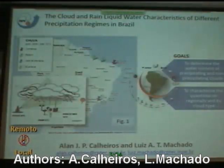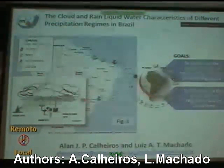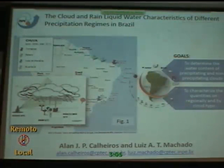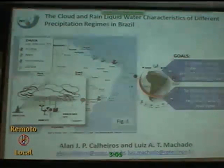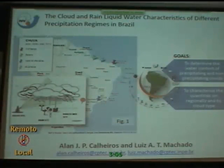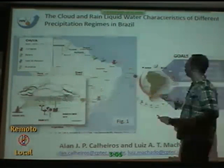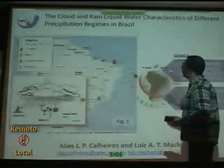I'd like to talk to you about some of my findings using the data from the SHUFA projects. This work was already submitted to Atmospheric Research, and the main points of my presentation are to determine the water content of precipitated and non-precipitated clouds using passive and active sensors, and to characterize the clouds regionally and by types. The first figure shows the geographical position of each site used in this work.